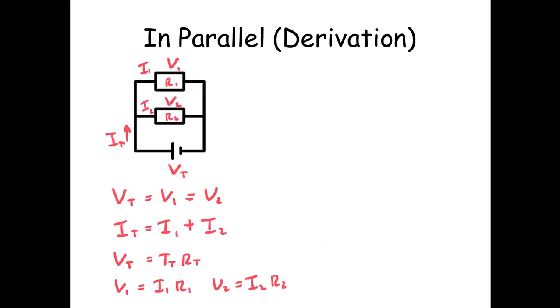Now the current leaving the cell, I total, well that's going to split at the junction and then that's going to be equal to I1 plus I2. So Vt equals ItRT, V1 equals I1R1 and V2 equals I2R2.